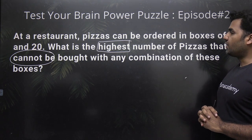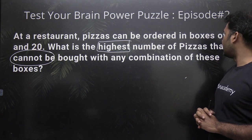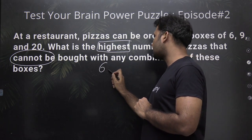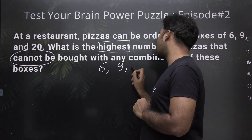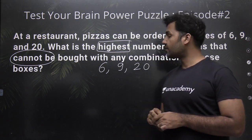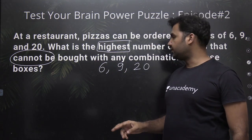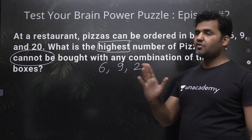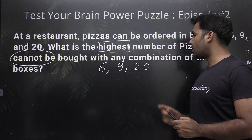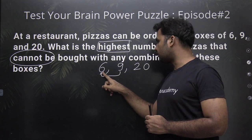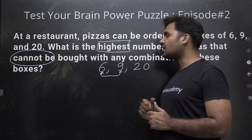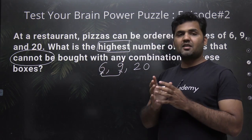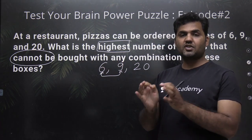Now, what is the logic behind this? Look at the numbers given: 6, 9, and 20. The first thing to observe is that 6 is a multiple of 3, 9 is a multiple of 3, and 20 gives a remainder of 2 when divided by 3. These are two consecutive multiples of 3 — the second and third multiples. With a combination of 6 and 9, I can purchase any number of pizzas which are multiples of 3.